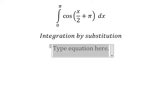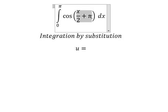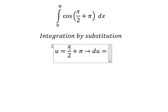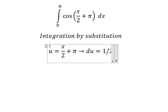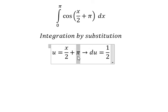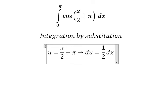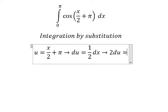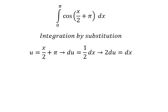I will set u equals to x over 2 plus π. Let's do the first derivative for both sides. This one we have, the π is a constant so you get zero. We don't have one over two here, so I will put one over two, which equals 1/2, to the left.